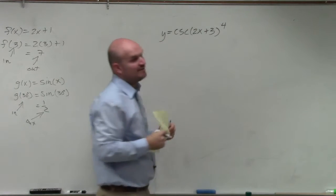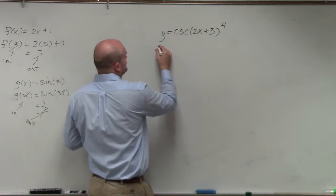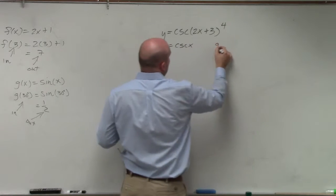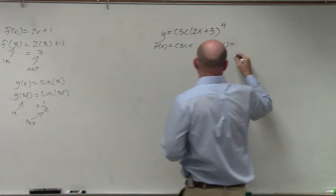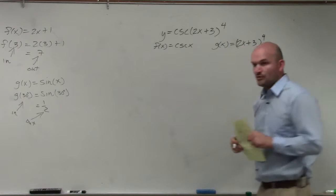All right. But still, we have, obviously, we have two functions. So we can just say that our f of x is equal to cosecant of x, and our g of x is equal to 2x plus 3 raised to the fourth.